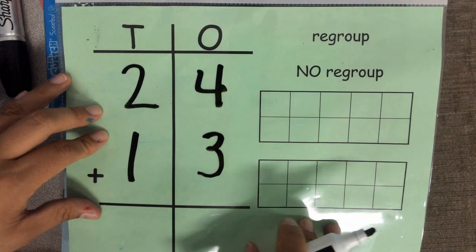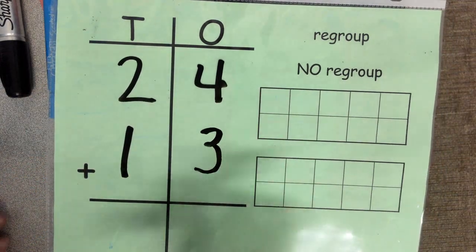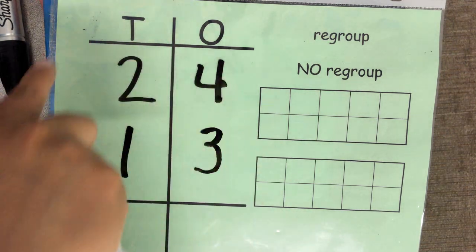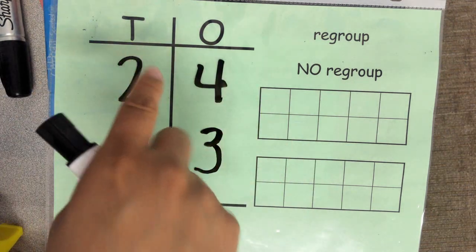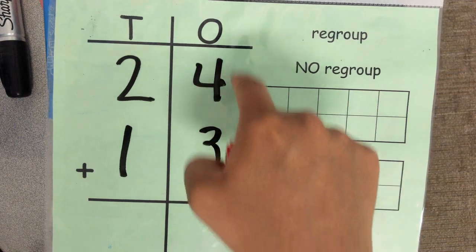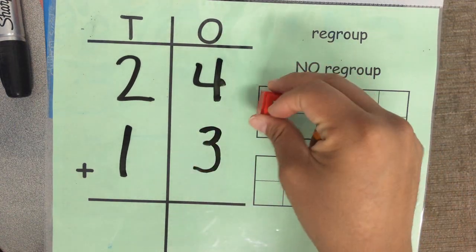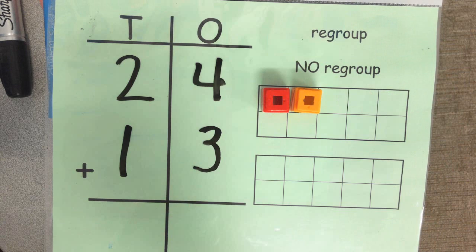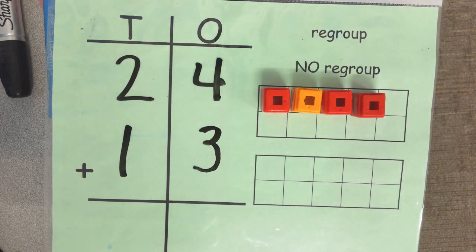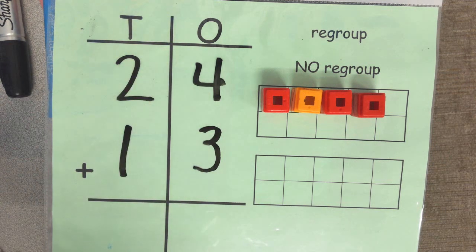You always start at the ones place, and then you move on to the tens place. First thing you want to do is make 24, so you're going to compose the number 24. How many ones do I have? Four, four ones. So I'm going to put 1, 2, 3, 4 in my ten-frame.